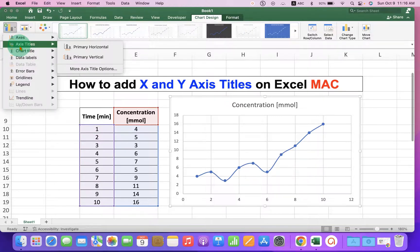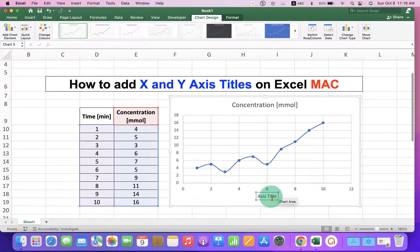You have to go to the axis titles and select the option primary horizontal and you will get this axis box.